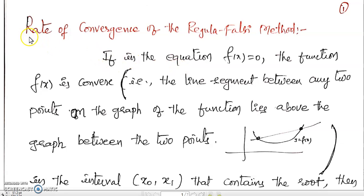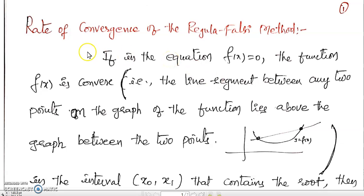Good morning students. Today we will see the rate of convergence of the regular falsi method. In the previous class, we have seen the rate of convergence of the secant method, which is of order 1.618.